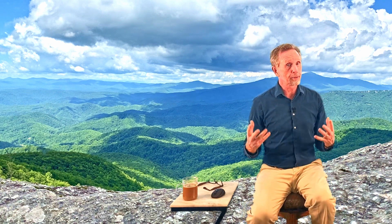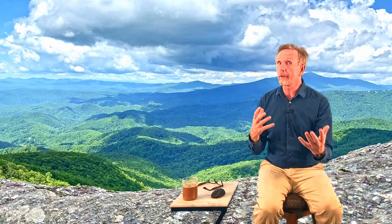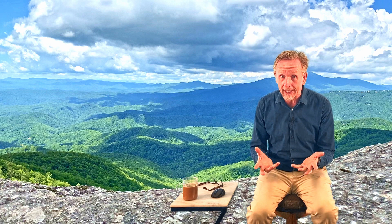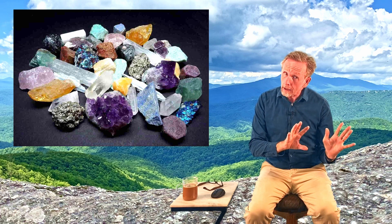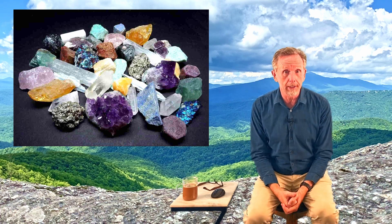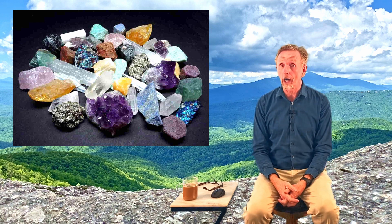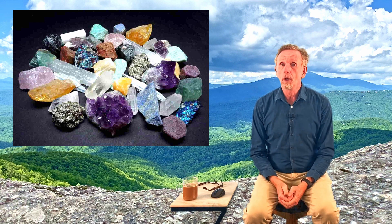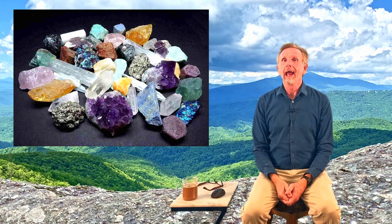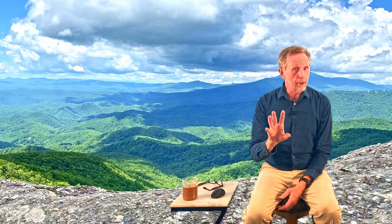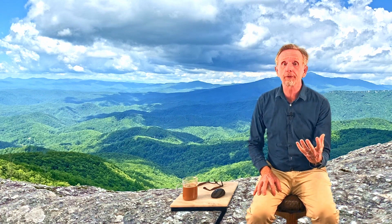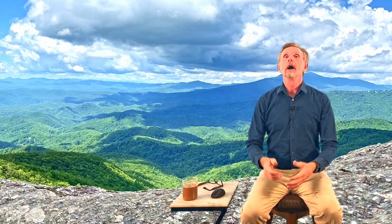Everything we find is up here in the crust. Minerals are just naturally occurring chemical elements or compounds that exist as crystalline solids. Most of them are compounds; very few are elements. Gold, aluminum, iron — a handful are actually elements. But most are some sort of compound, a mixture. Then we talk about a mineral resource — that's where there is enough concentration of that particular mineral that we can extract it at a reasonable cost.